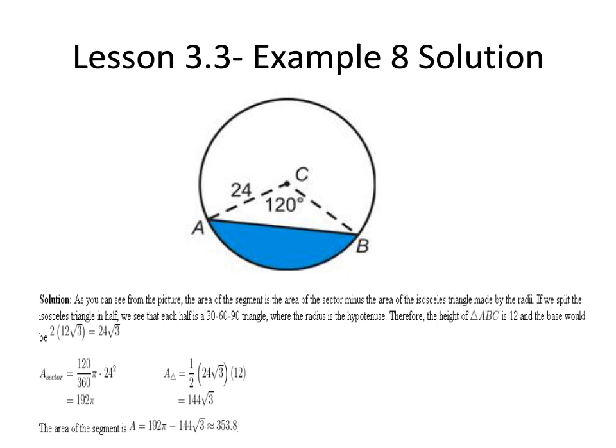By splitting the isosceles triangle in half we can more easily find the height and the base of each triangle to find the area of the whole. When we split the isosceles triangle in half we see that we get